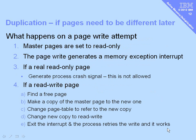Of course, the opposite case can occur: we may have deduplicated a page, and then one program attempts to write to that master page. Master pages are set as read-only, so the write generates a memory exception. If it's a genuinely read-only memory page, we crash the process via a signal. If it really should be a read-write page, the hypervisor finds a free page, makes a copy of the master page, changes the page table so it now refers to that new copy, marks it read-write, exits the interrupt, and the process in the virtual machine retries the write — and this time it will work.